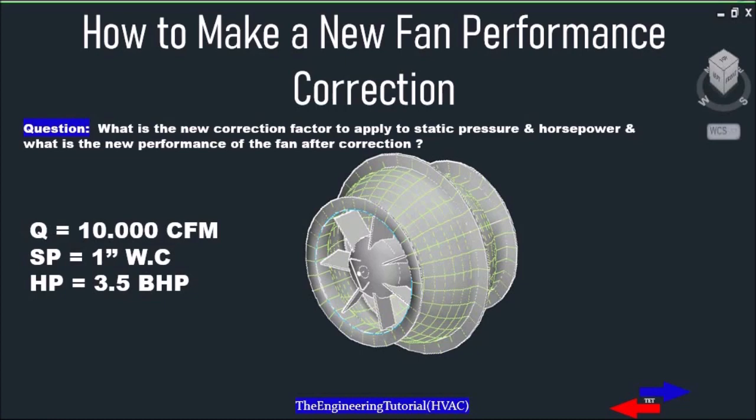it's just more or less dense depending on altitude and temperature conditions. Let's say we have selected a fan which operates at standard conditions — 70 degrees Fahrenheit at sea level — and it is capable of delivering 10,000 CFM of air at a static pressure of 1 inch of water column with a brake horsepower of 3.5.